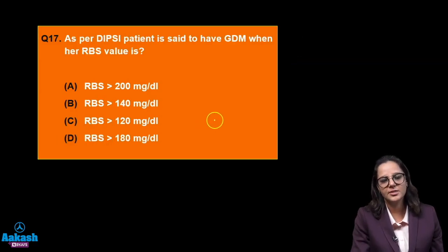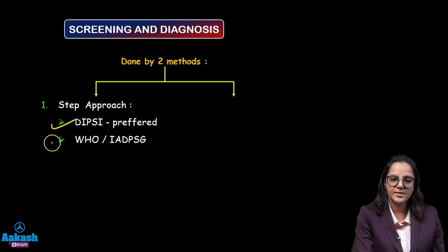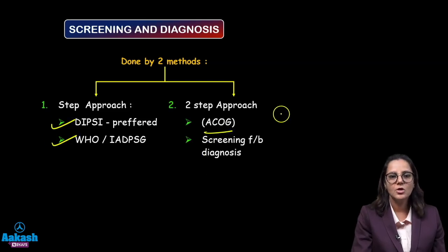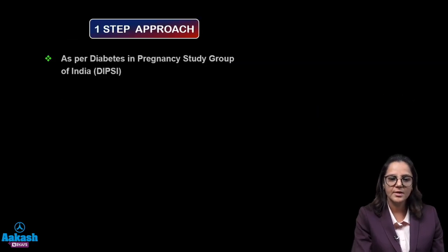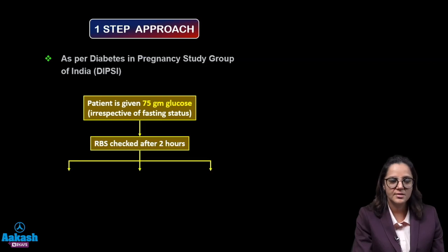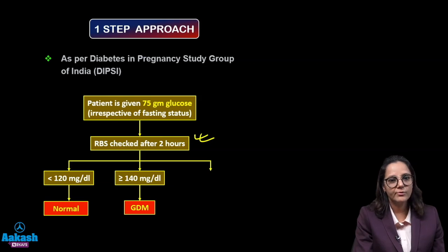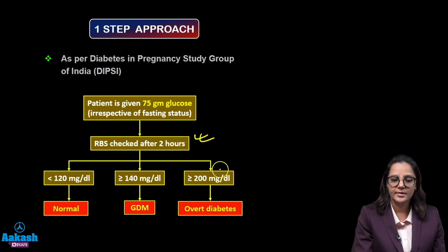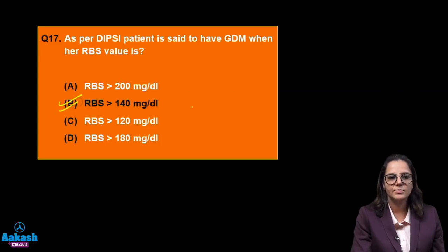As per DIPC, a patient is said to have gestational diabetes at what random blood sugar value? Screening is done by two methods: one-step approach by DIPC and WHO, and two-step approach by ACOG. In the ACOG approach, GCT is done first, and if blood sugar is high, oral glucose tolerance test follows. DIPC gives 75 grams of glucose irrespective of fasting status, takes a single sample after 2 hours. If less than 120, no concern. If more than 140, it is gestational diabetes. If more than 200, it is overt diabetes. As per DIPC, the patient is said to be diabetic if RBS is more than 140.